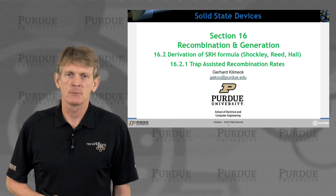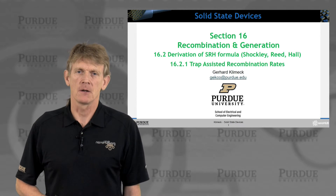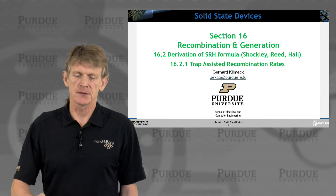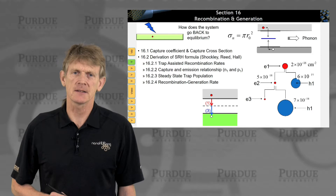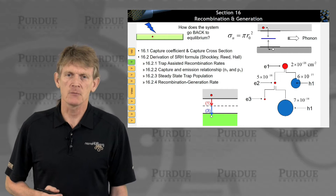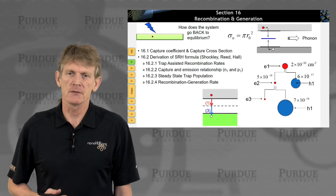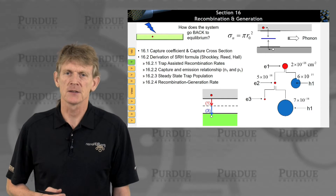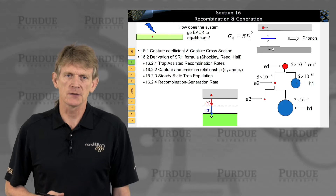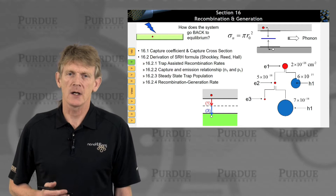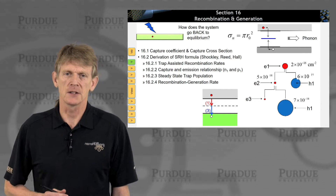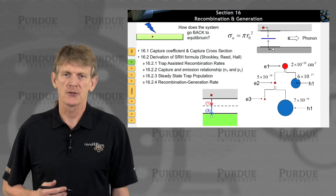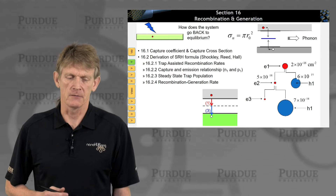Here we are in section 16.2, Deriving Shockley-Reed-Hall. We'll do this in a couple of steps. The first step is to deal with trap-assisted recombination rates. In the previous section, we introduced the concept of capture rates and scattering cross-sections, and we want to relate those physical properties to how electrons actually decrease in time and how holes are increasing or decreasing in time.